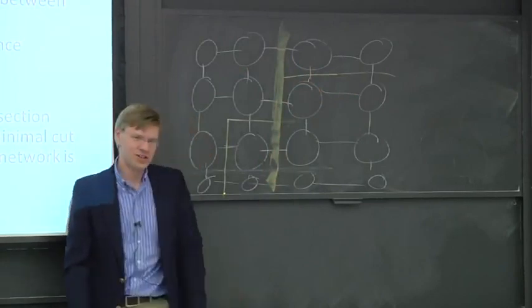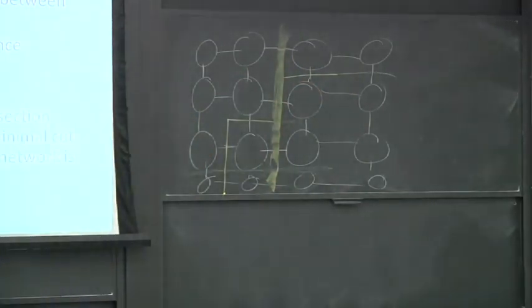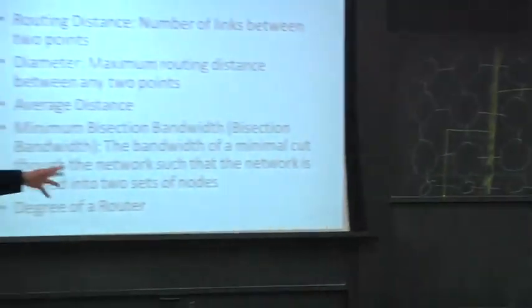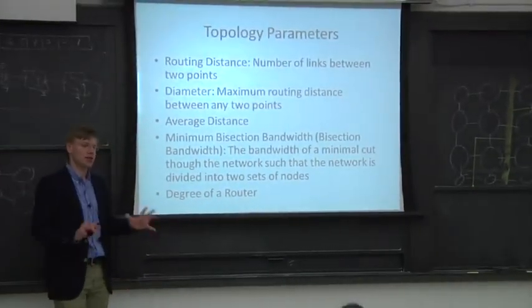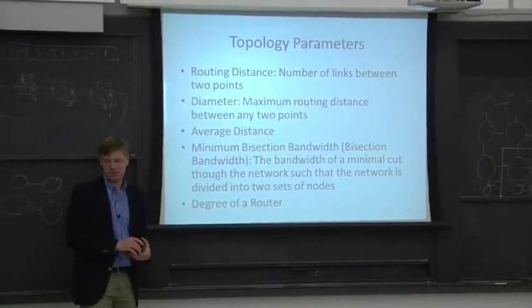So all we're trying to get across here is if you want bisection bandwidth, you have to go for the minimum bisection bandwidth. And you need to be careful about where you cut. And sometimes it's not readily apparent in more complex networks of where the minimum cut is.